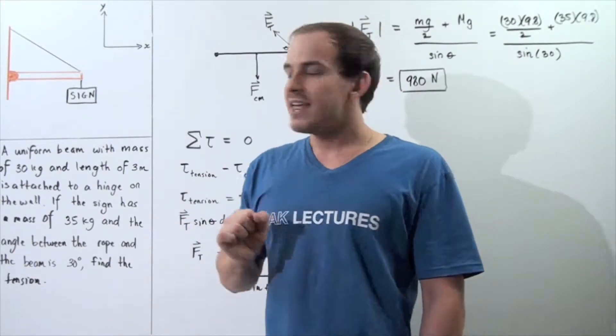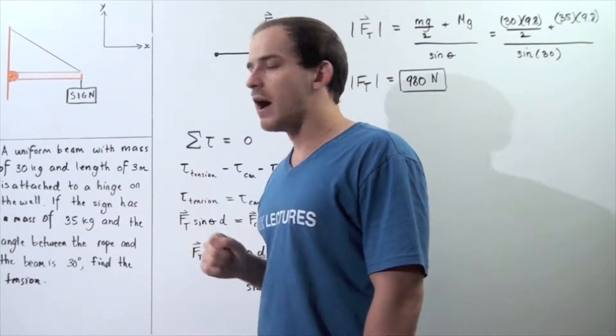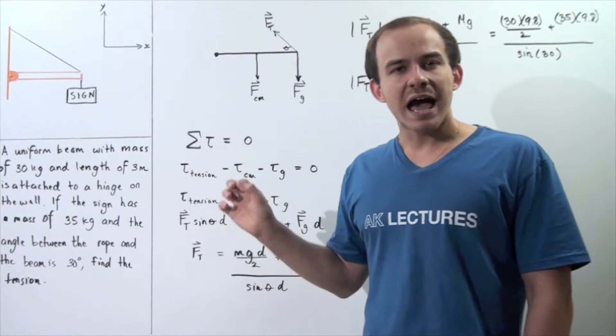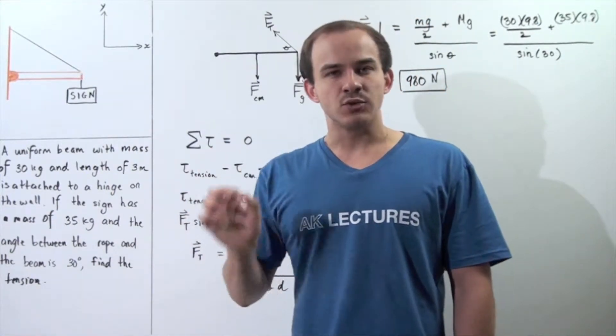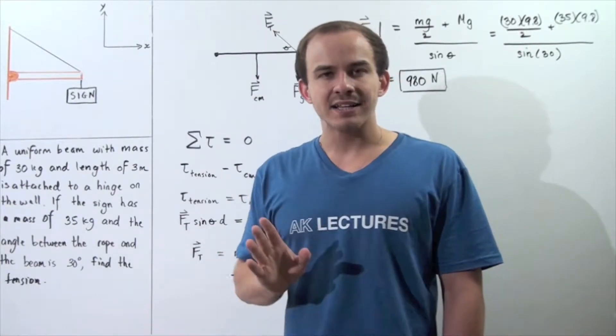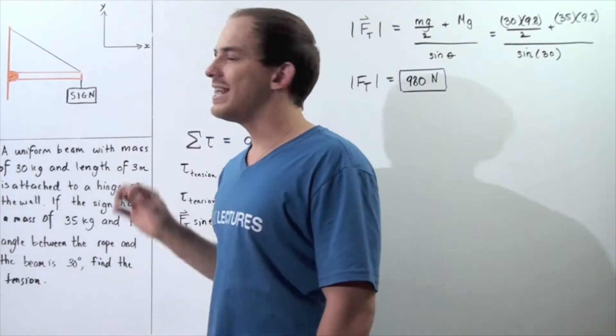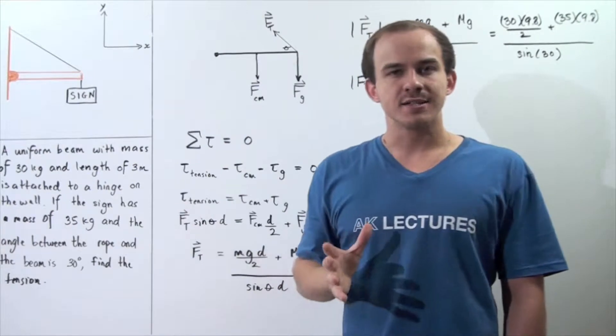We hang a sign that has a mass of 35 kilograms. Knowing that information and the fact that our beam remains in static equilibrium, we want to calculate what the tension in the massless rope is.